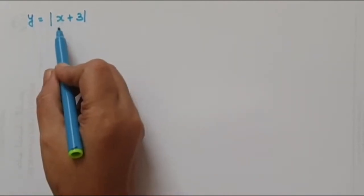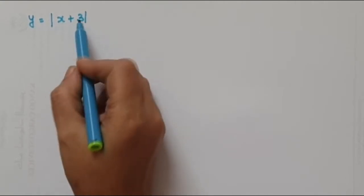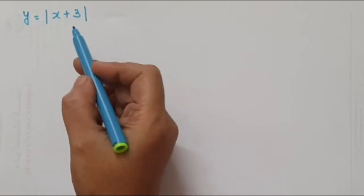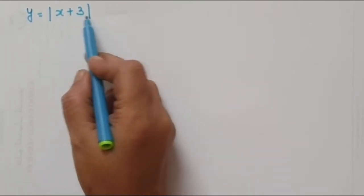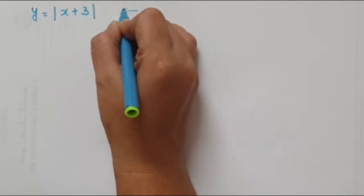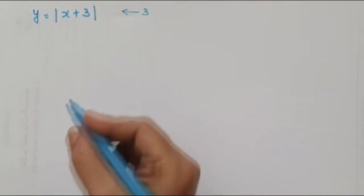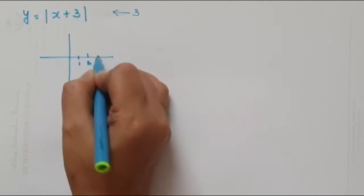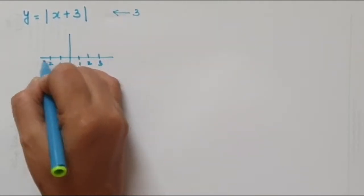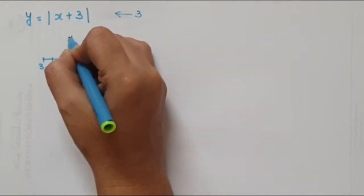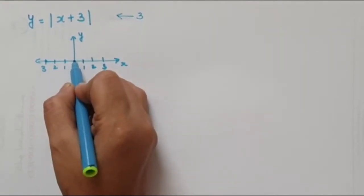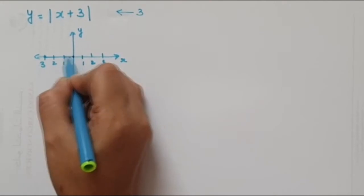Now let us draw the graph of y = |x + 3|. This 3 is inside the absolute value bracket. When it is inside the absolute value, you know it shifts in the horizontal direction — the graph moves 3 units to the left. We already know the graph of y = |x|; now it moves 3 blocks to the left.